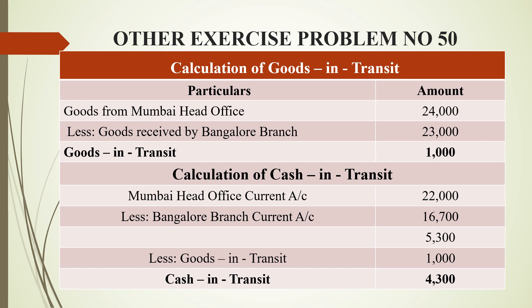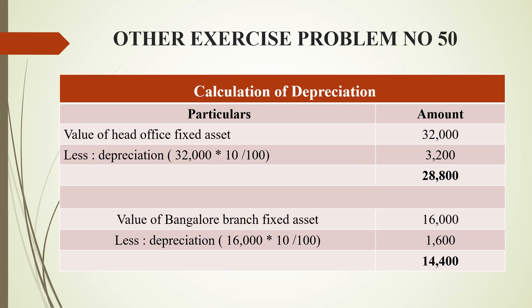So we find that difference figure. Now we are going to prepare the trading profit and loss account. The depreciation value we calculate here. The fixed asset value for head office is 32,000; 10% depreciation is 3,200 rupees — that is 32,000 × 10/100. So the final net value is 28,800 rupees.